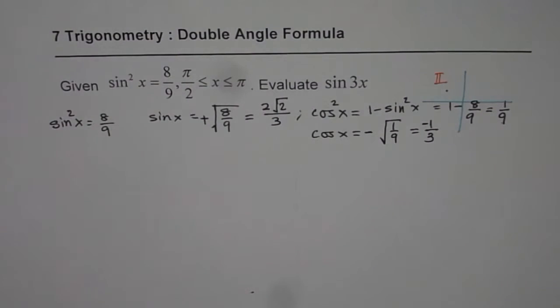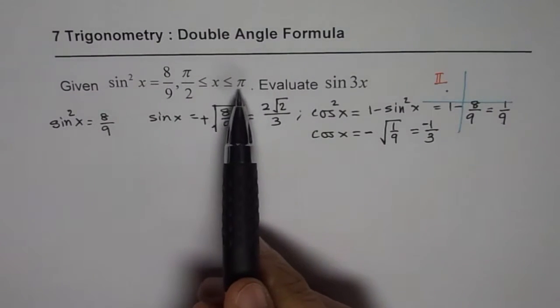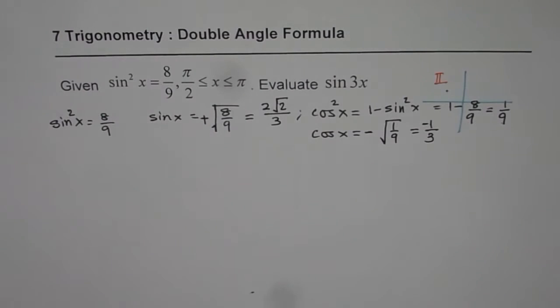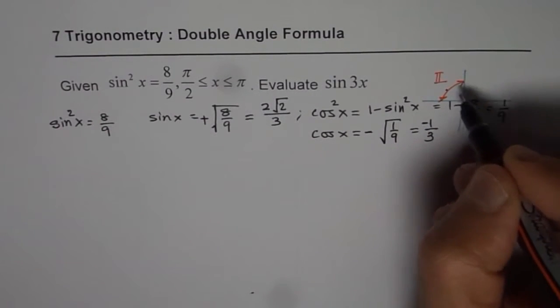That is very important to understand in this particular question. When we are given x is in quadrant 2, between π/2 to π, somewhere here we have x.